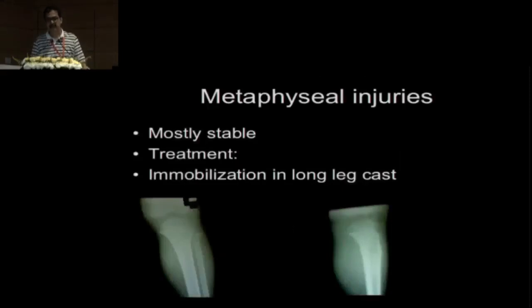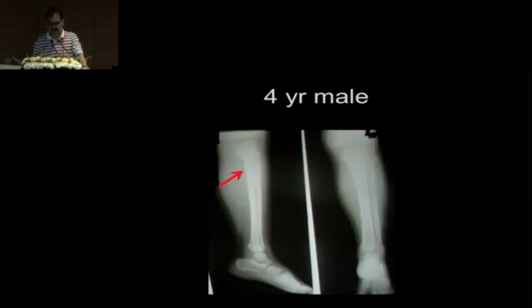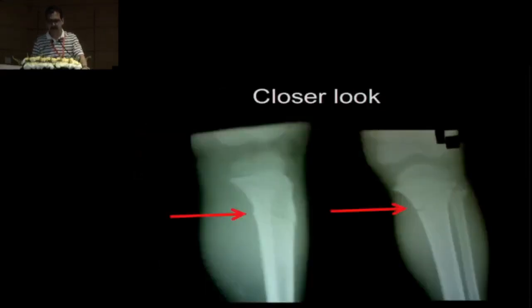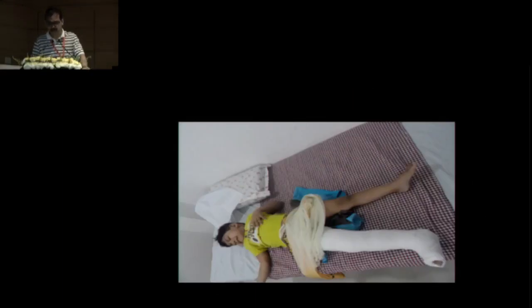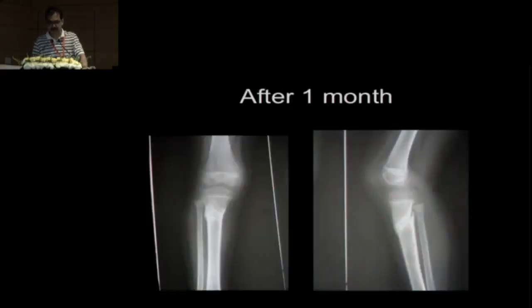The second category is metaphyseal injuries. They are more stable and treatment is very straightforward in most cases - you simply need to immobilize in a long leg cast. For example, a four-year-old male child with a simple fracture: you just give a standard long leg cast and it unites very nicely.